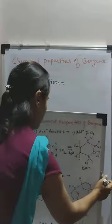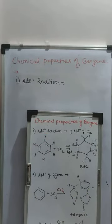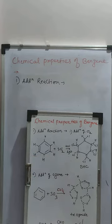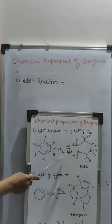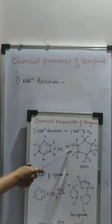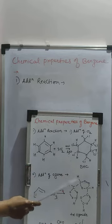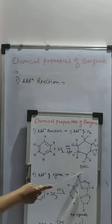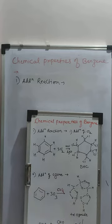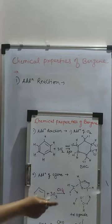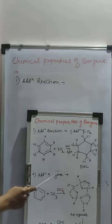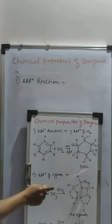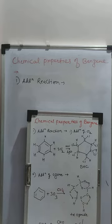First: addition of chlorine. When benzene is treated with chlorine in the presence of UV light or sunlight, there is formation of BHC — benzene hexachloride.